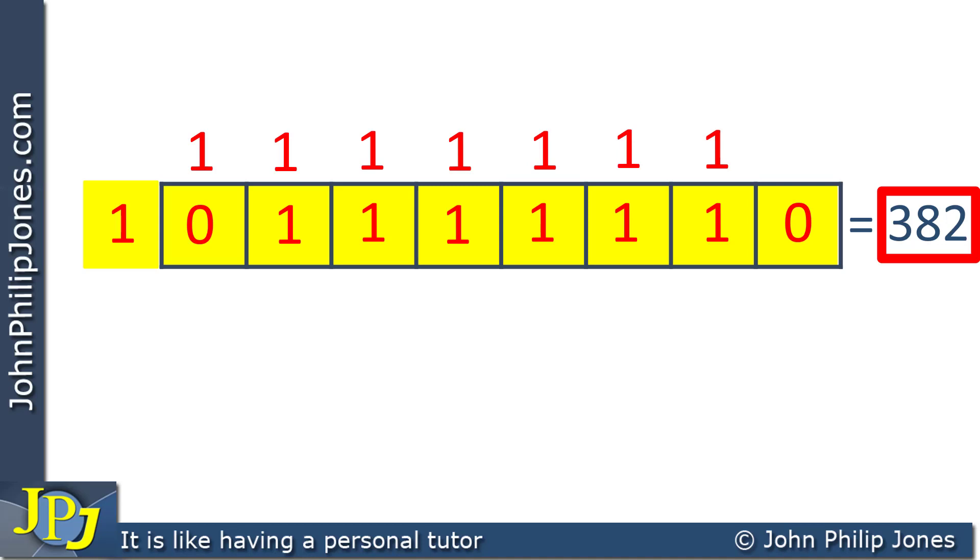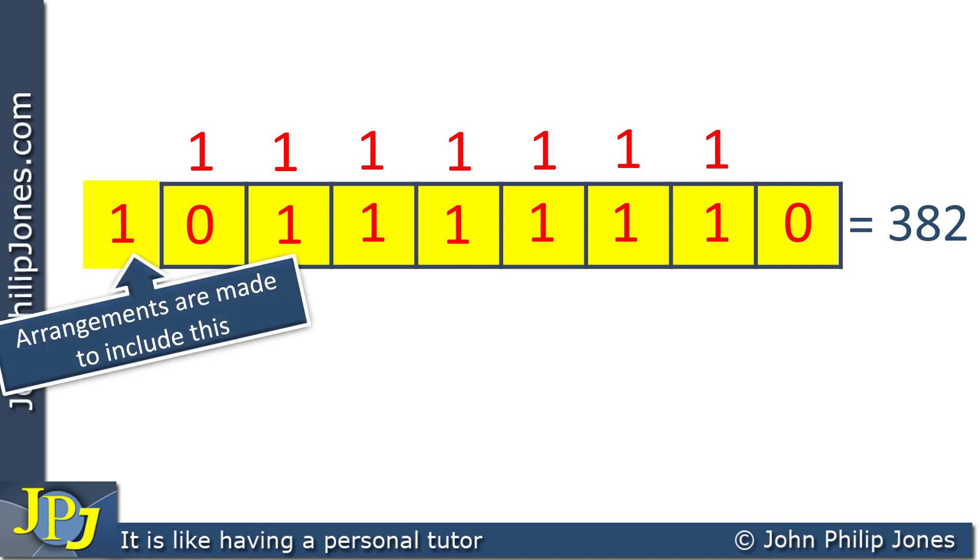So what we have to do, or what you have to ensure that the computer does for us, is to make arrangements to include this. Now, how is that achieved? A possibility is you could store the result in a bigger register, in a 16-bit register. But I'm going to show you how this can be achieved by storing it in consecutive memory locations.